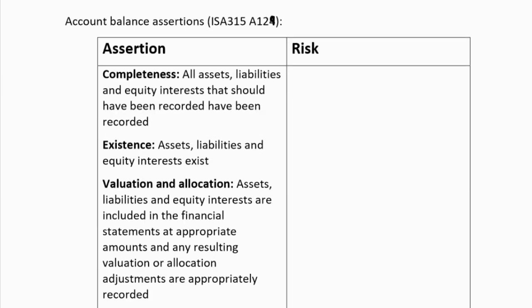Remember ISA 315 A129 — old version — A190 in the newer version. They say completeness: all assets, liabilities, and equity interests that should have been recorded have been recorded. We can see how they make it very specific to what an account balance is — assets, liabilities, or equity. The risk here is that assets, liabilities, and equity interests are understated — they're not recorded.